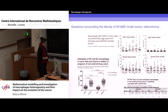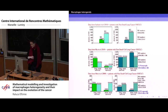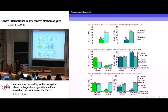Most of the papers that you can find are about lung cancer — non-small cell lung cancer — and the data is presented in different ways: numbers of macrophages, M1 and M2 cells. I decided to put them in a consistent way so we can actually compare the data between different papers.